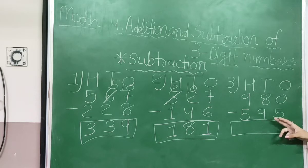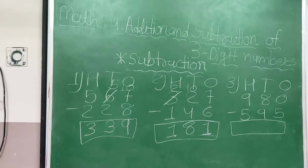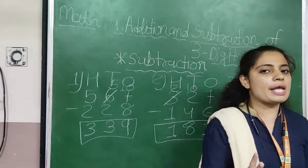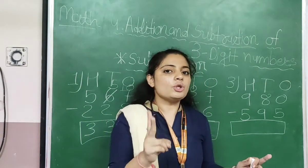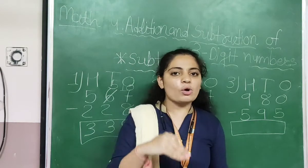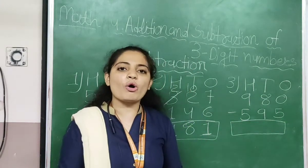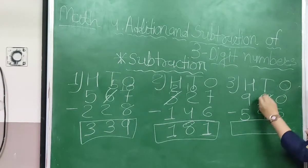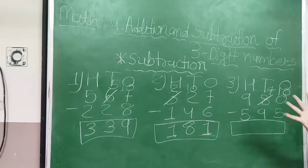980 minus 595. Look here students — 0 minus 5. One important thing: when 0 is on top in a subtraction sum, you are supposed to calculate and borrow from the adjacent number. But if 0 is on the second line (bottom), no need to calculate — just write down the top number. Here 0 is on top, so we borrow from 8. I am writing 7 and adding 10 here. So 10 minus 5 — count from 5: 6, 7, 8, 9, 10. Our answer will be 5.